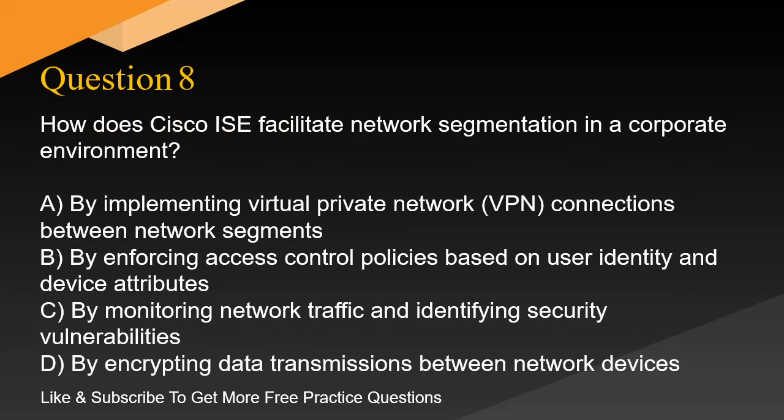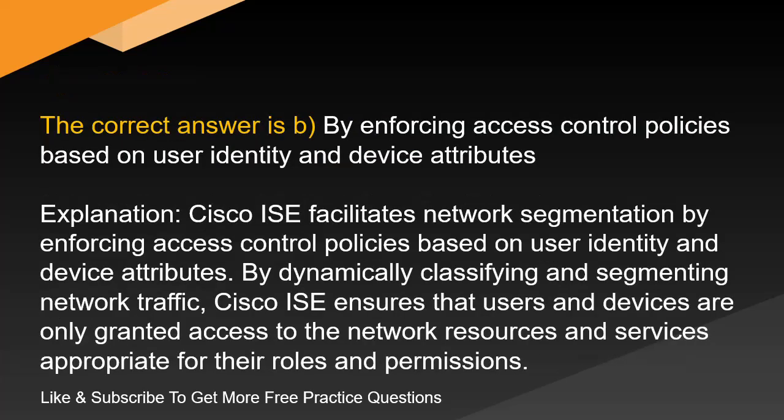Question 8. How does Cisco ISE facilitate network segmentation in a corporate environment? A. By implementing virtual private network (VPN) connections between network segments. B. By enforcing access control policies based on user identity and device attributes. C. By monitoring network traffic and identifying security vulnerabilities. D. By encrypting data transmissions between network devices. The correct answer is B. By enforcing access control policies based on user identity and device attributes.